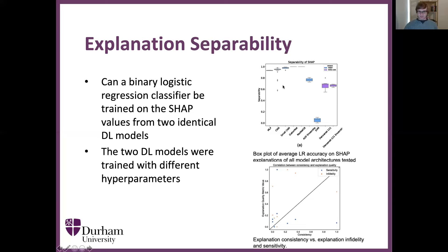This first box plot shows that across all of the model architectures tested and the two datasets tested, we see extremely high inconsistency of the explanations. With the exception of the one kernel-based method we tested — SVMs — we can see that there is very little correlation between explanation consistency and explanation quality, measured here by infidelity and sensitivity. This, coupled with the fact that kernel-based methods don't see inconsistent explanations, highlights that this is most likely an issue with deep learning models and not the explanation techniques themselves.